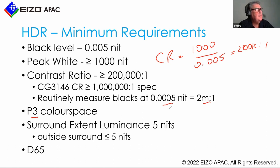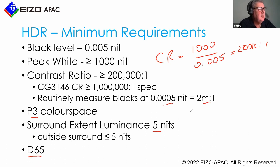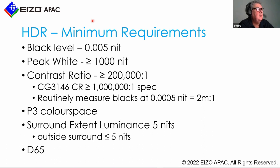The other minimum requirement is a P3 color space. Even though BT.2100 specifies Rec.2020, no monitor in existence can currently meet that display color space, so we use P3 as an interim color space for HDR work. The Surround Extend Luminance should be 5 nits — the peripheral viewing area behind the monitor in your grading room — and any light outside of that should be less than or equal to 5 nits. D65 is the correlated color temperature you should have. I go into many post-suites and find tungsten practicals in corners, so make sure all light sources in your suite are D65.